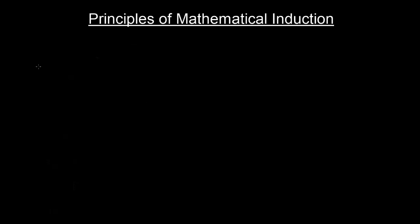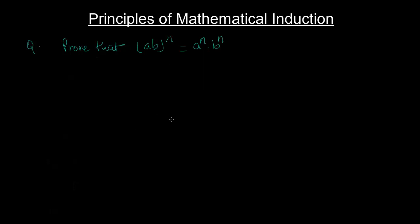There are cases where we are supposed to prove a law that we already know. For example, someone asks you to prove the exponent law from class 7 or 8: (a·b) to the power n is equal to a to the power n multiplied by b to the power n. We know it to be true by the very fundamentals of exponents.